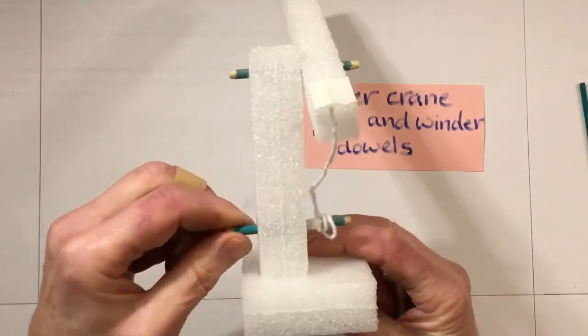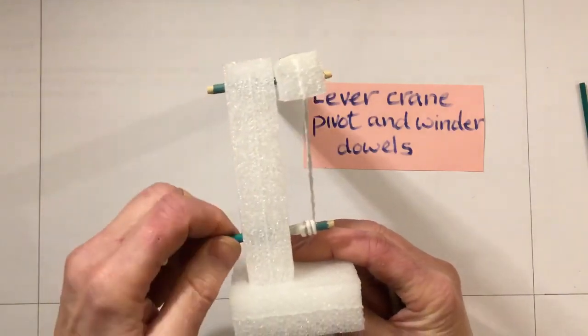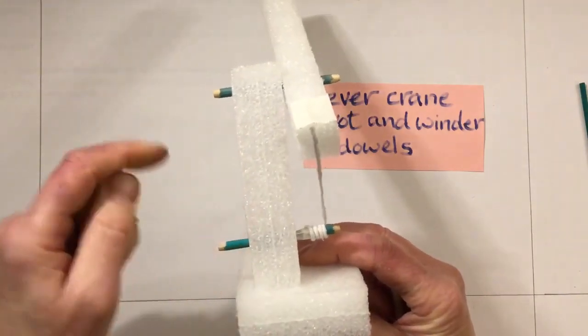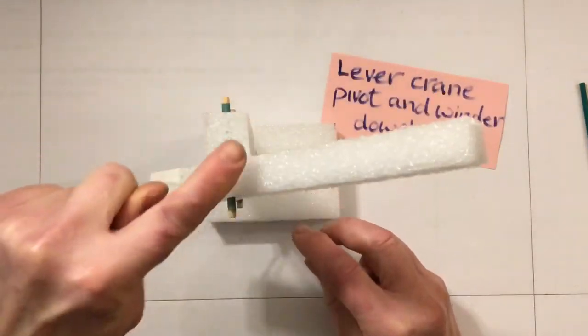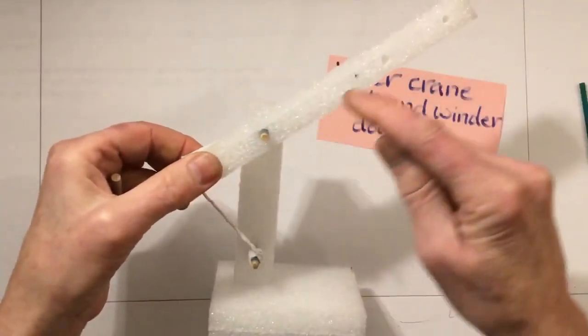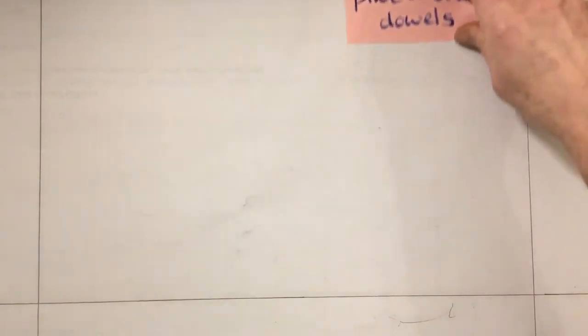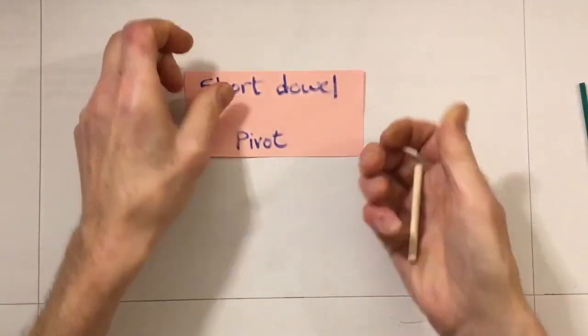There's our long winder, and the pivot is a bit shorter. The pivot is the bit that holds the lever arm. Just as a reminder, look - the short dowel is going to be our pivot.